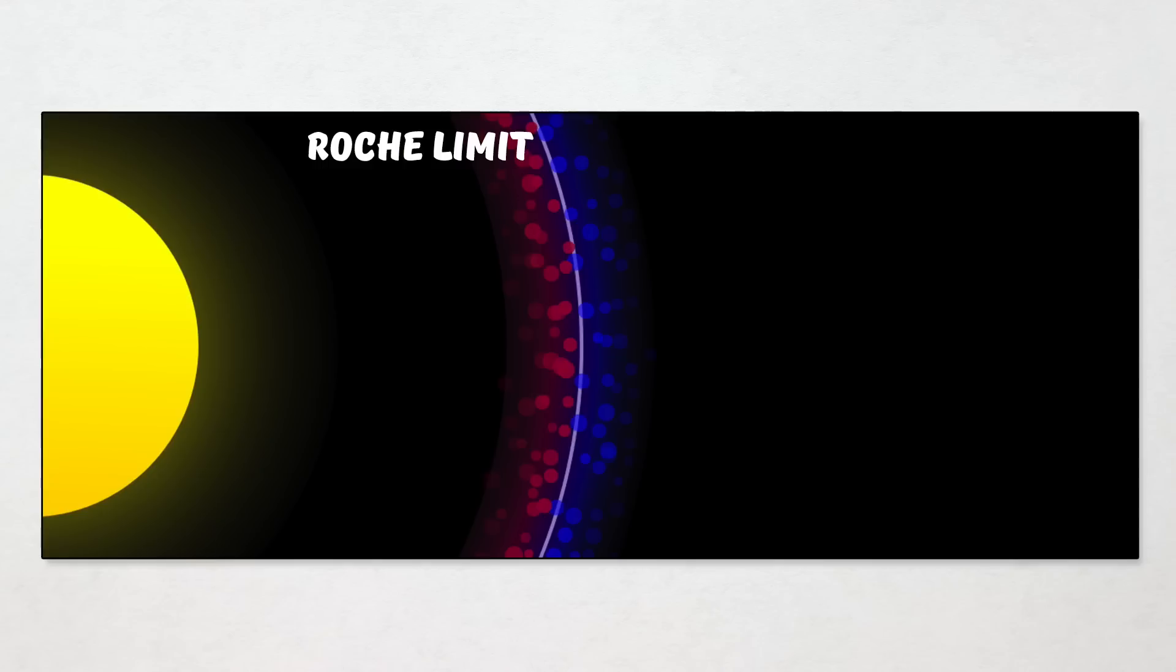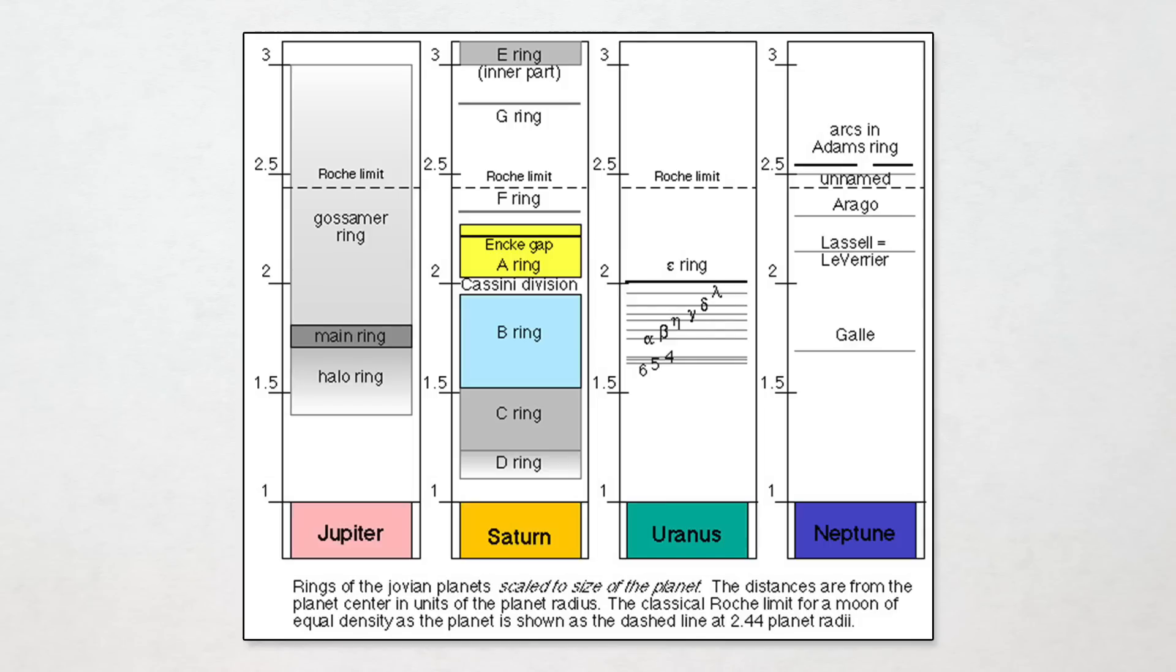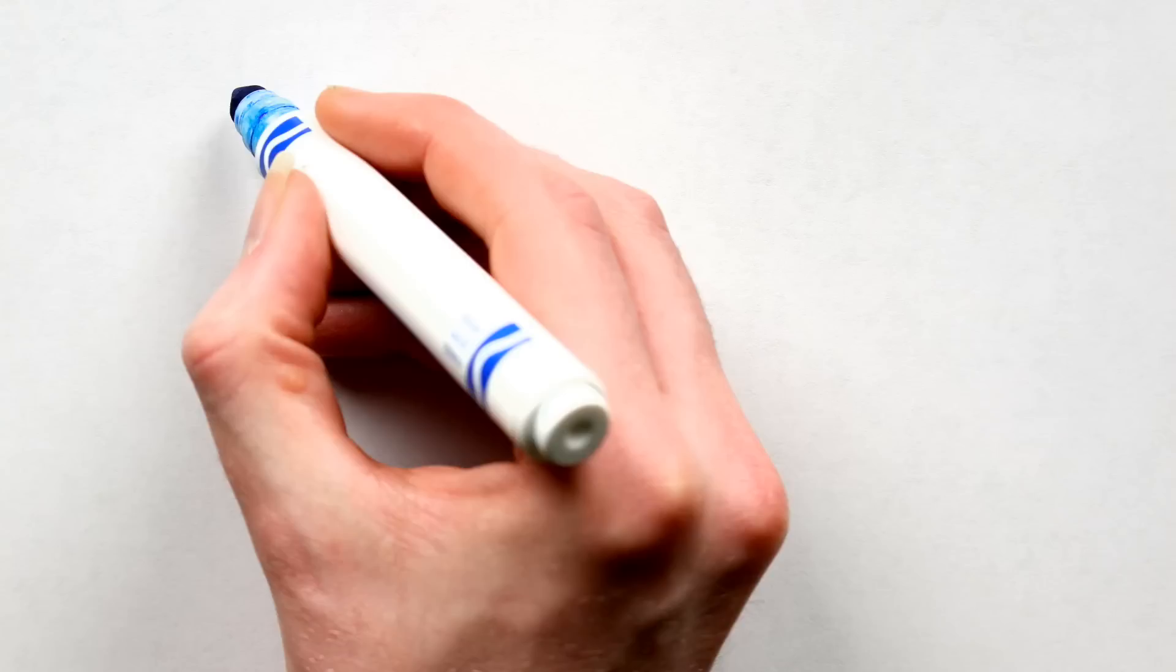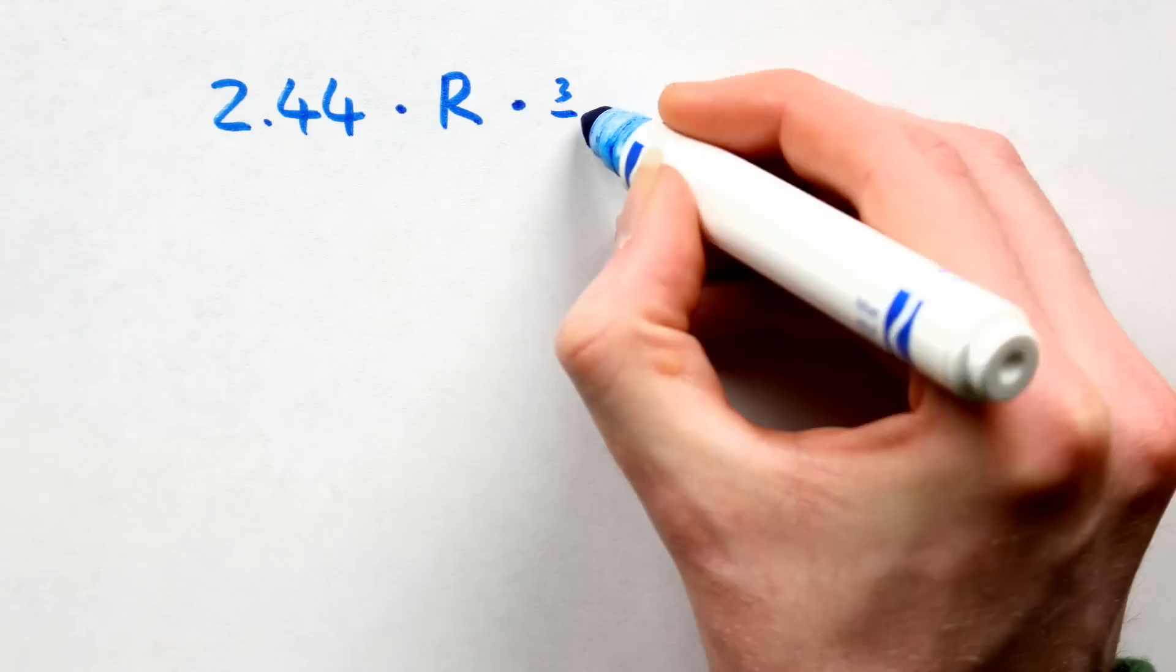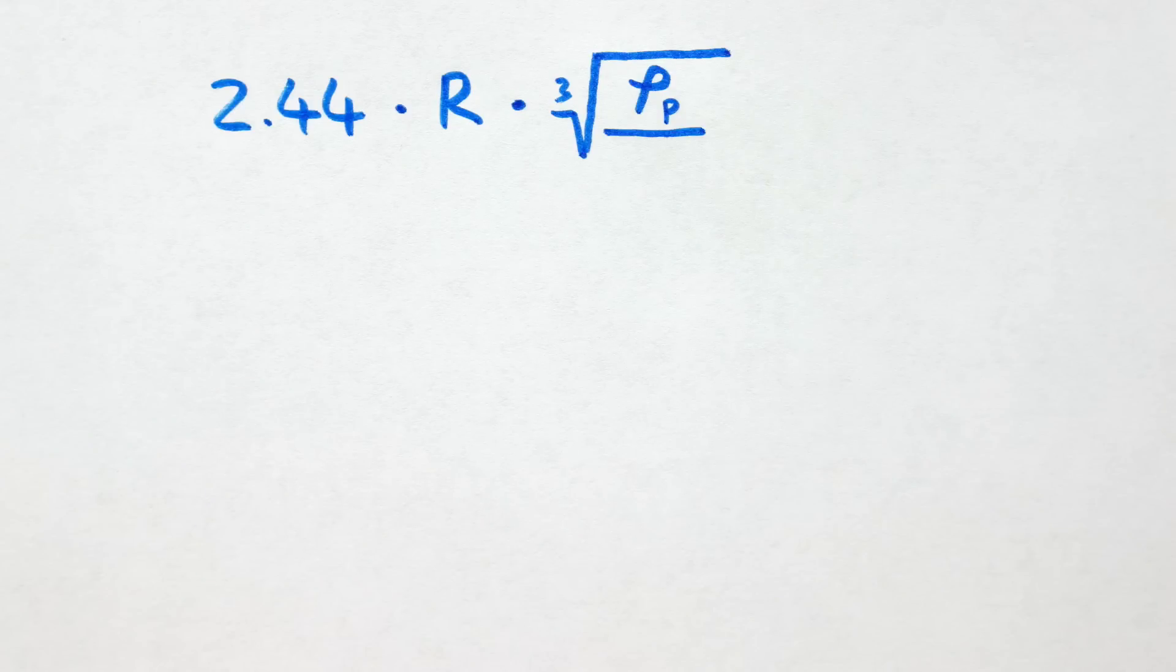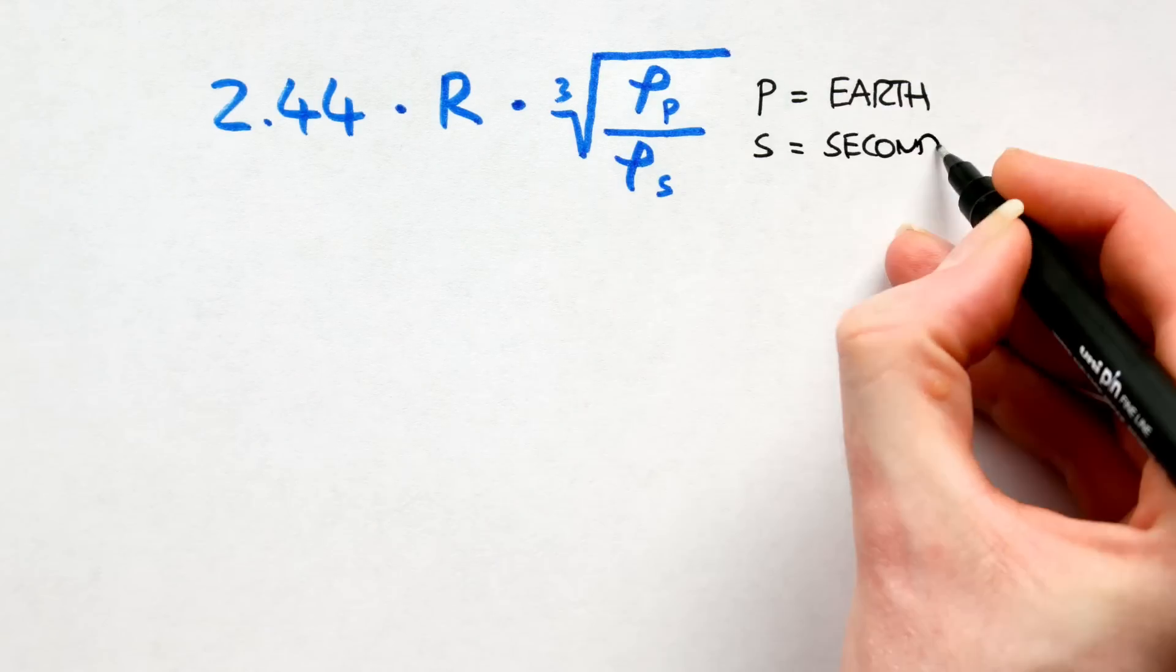As such, the outer boundary of any ring system will always be at the Roche limit. Unless otherwise acted upon, rings will exist entirely within this region. The Roche limit is given by 2.44 times r, the radius of the primary, multiplied by the cube root of the density of the primary divided by the density of the secondary. In this case, Earth is our primary and Doris is our secondary.